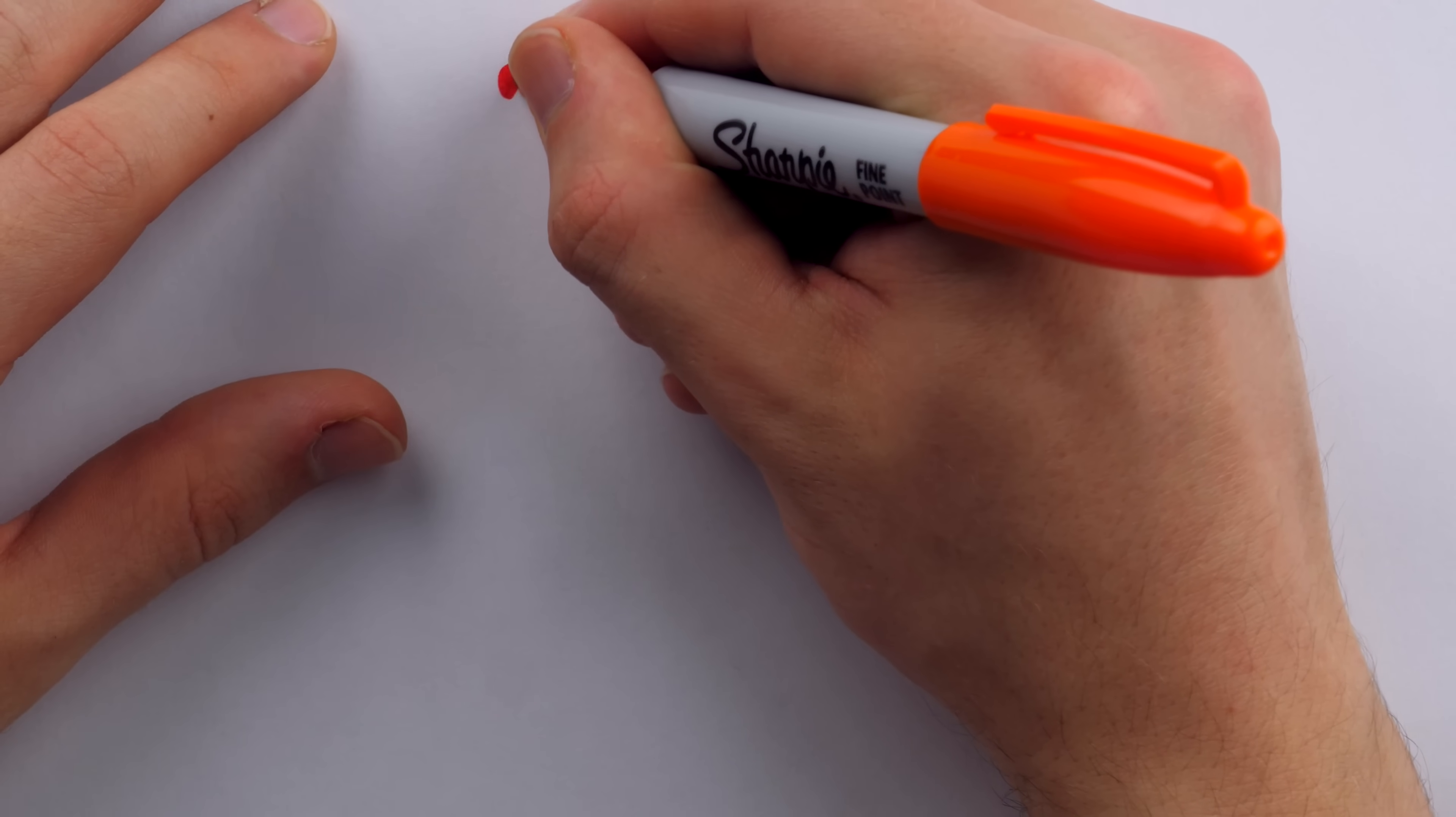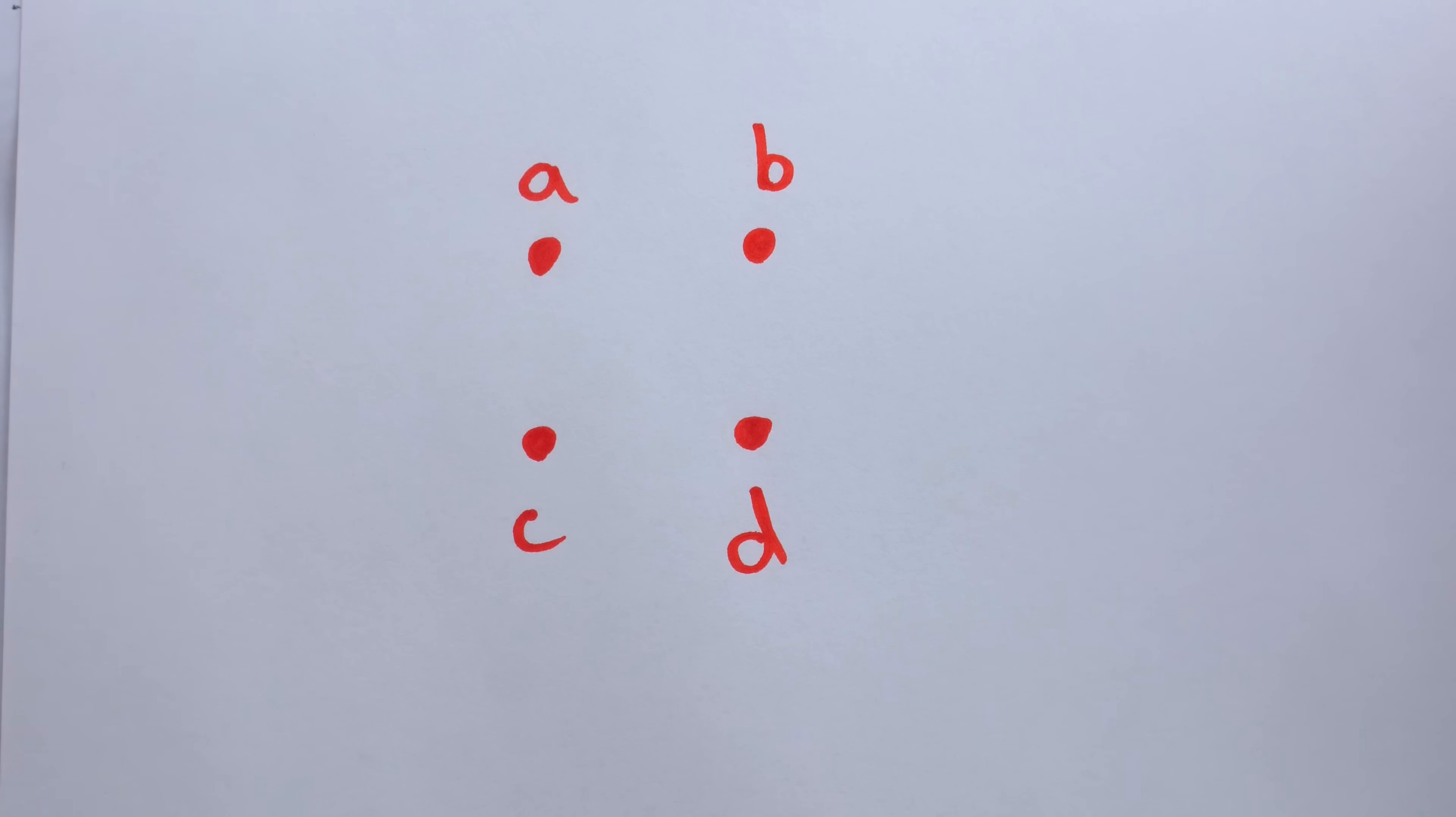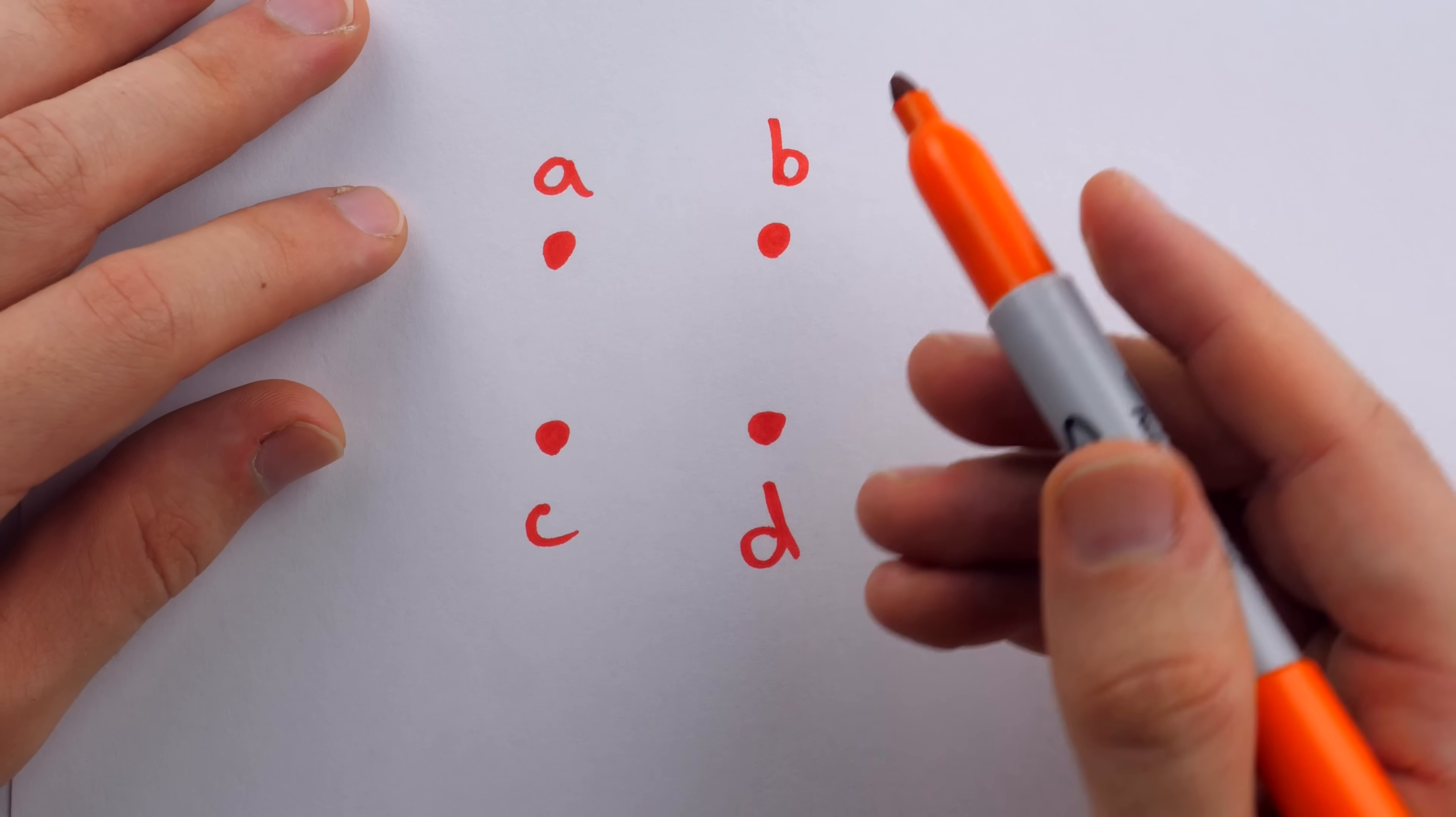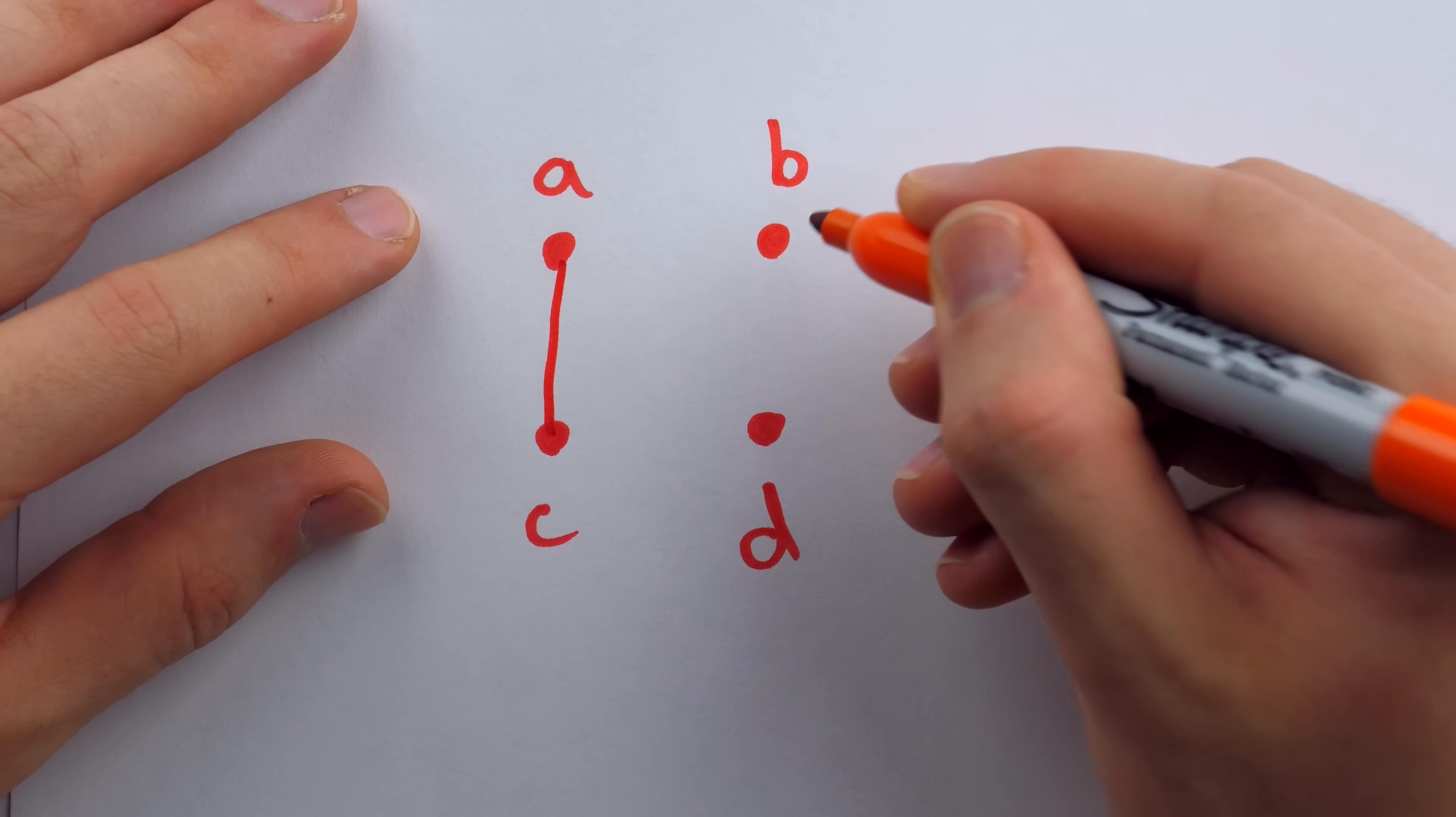If I want every vertex to get matched up with a partner, well, that would only be possible in a graph that has an even number of vertices, like this graph that has four vertices. In this graph, I could match A with C, and I could match B with D. That would be what we call a perfect matching, because every vertex is covered by some edge. There are other possibilities too. I could match A with B, and C with D. Or we could match A with D, and C with B. There are several possibilities.